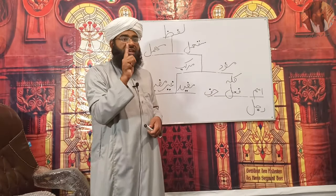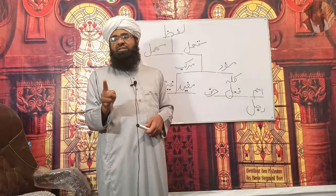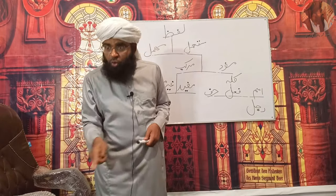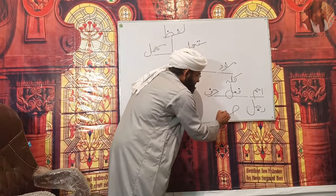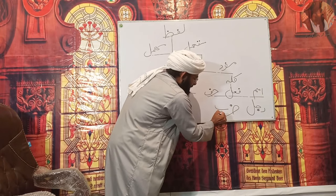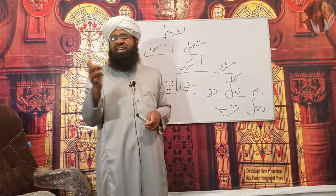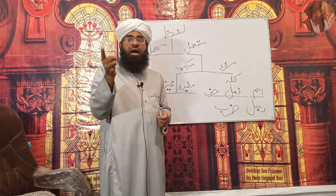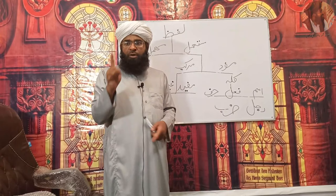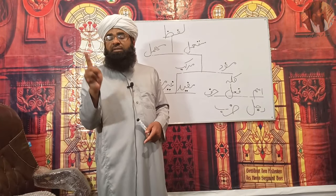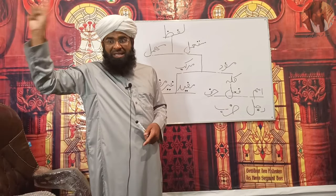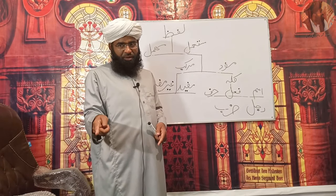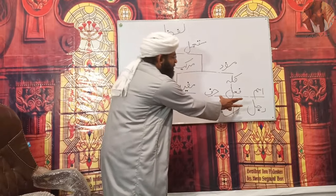فعل کی تعریف: فعل وہ کلمہ ہے جو خود بخود معنی پر دلالت کرے اور اس کا معنی تین زمانوں میں سے ایک زمانے کے ساتھ ملا ہوا ہو۔ مثال: دارابا۔ دارابا کا معنی ہے مارا، اور یہ ماضی کے ساتھ ملا ہوا ہے۔ حرف کی تعریف: حرف وہ کلمہ ہے جو خود بخود معنی پر دلالت ہی نہیں کرتا۔